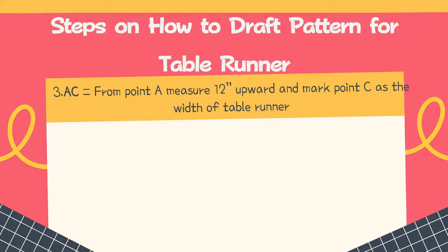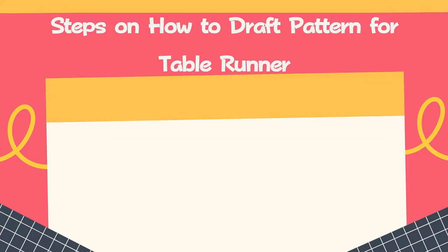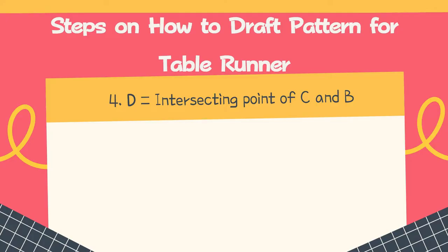Step 3 (AC): from point A, measure 12 inches upward and mark point C as the width of the table runner. After measuring the length, we now measure the width — starting from point A going up, marking it as point C. Step 4: letter D will be the intersecting point of C and B, as shown in the picture.